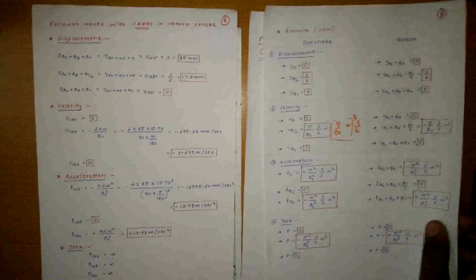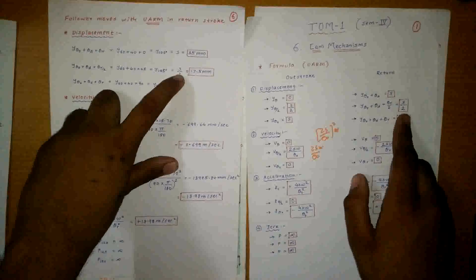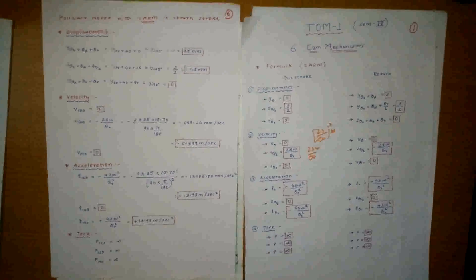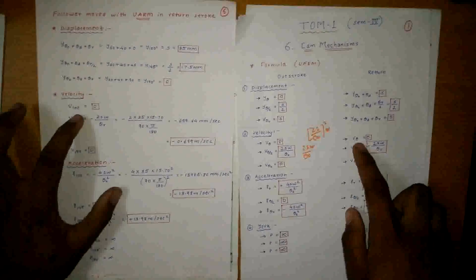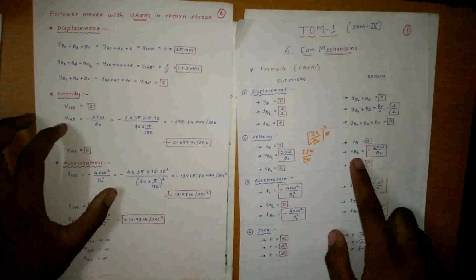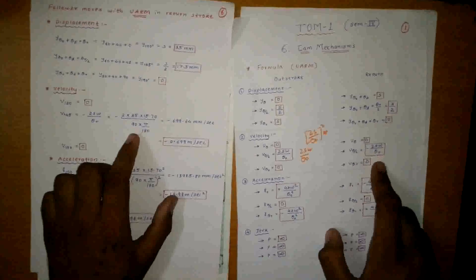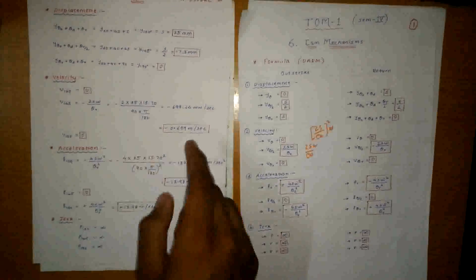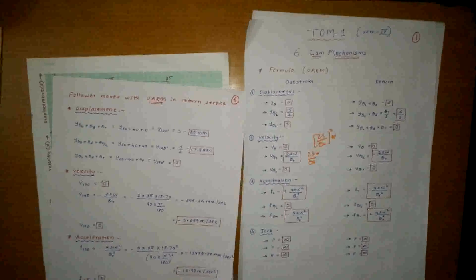Now the follower moves with URM on the return stroke. Displacement is given back. For URM return stroke formulas: first term is s, second term is s/2, third term is 0. Just put in the values. For velocity at theta = 100° (which is 60° + 40°), and v at theta/2: it is −2s·Omega/theta-r. Remember to convert theta-r to radians. Just put in the values to get acceleration — for return stroke, remember it is minus then plus.